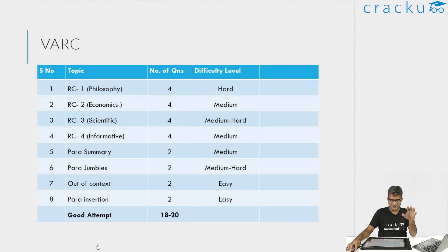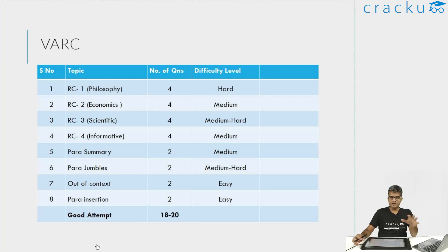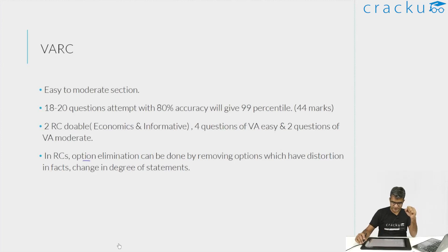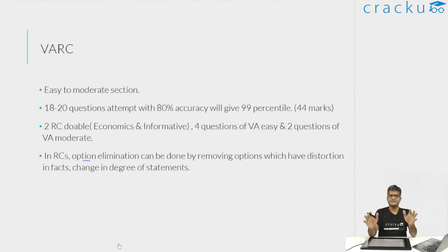Coming to the verbal section's non-RC portion: there were two para-summary questions — one of them was definitely tricky. There were also para-jumbles. In general I struggle with para-jumbles, but one para-jumble was on the easier side and I got it quickly; the other was definitely tricky and I wasn't able to solve it. The out-of-context and para-insertion questions I felt were definitely easy. Overall, this is a section which is definitely scoring. If you get a section like this in the actual examination, you should be really happy. I would say anybody who scored more than 40 has done fairly well — attempting 20 questions with 80% accuracy is close to 99 percentile.